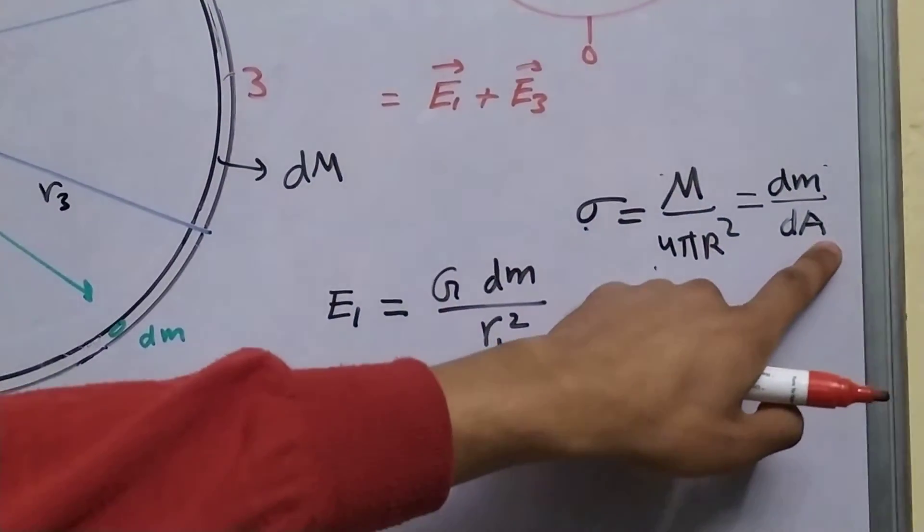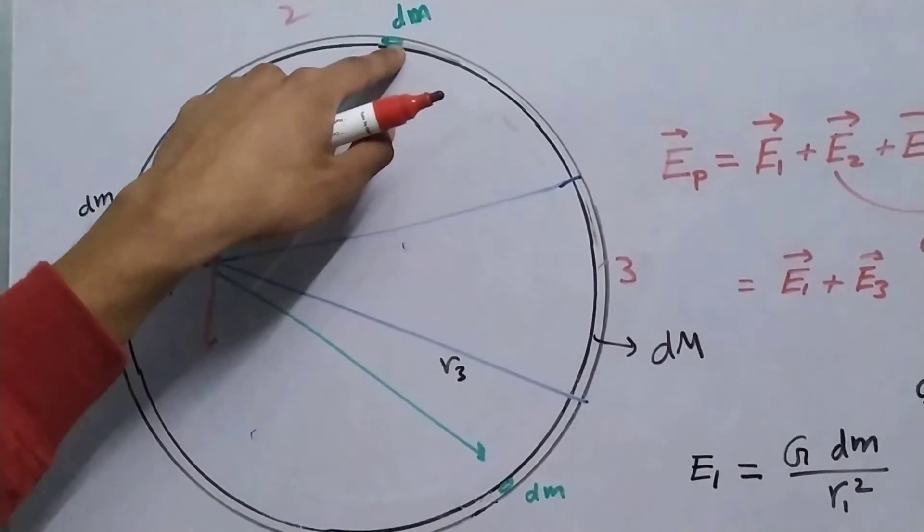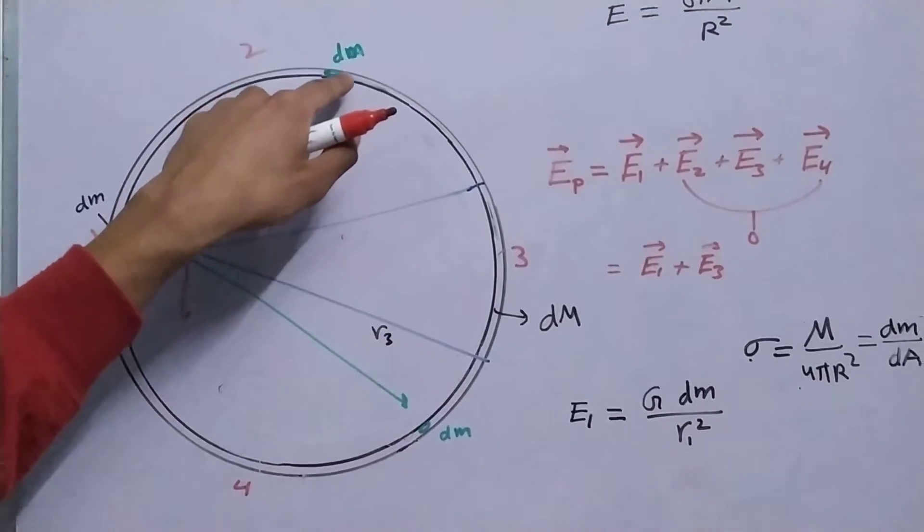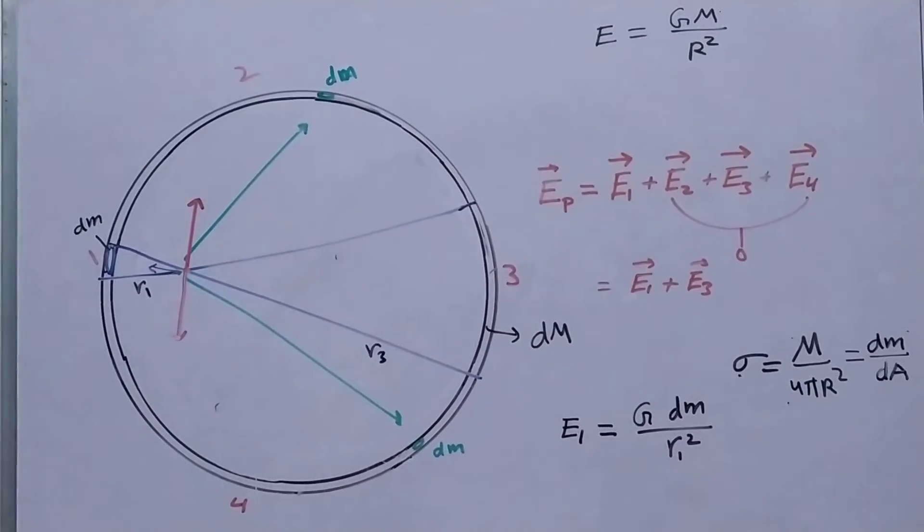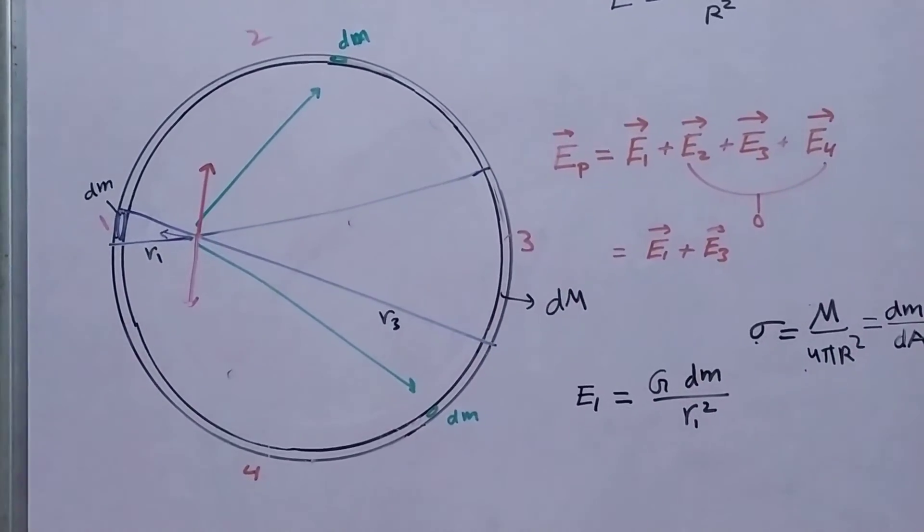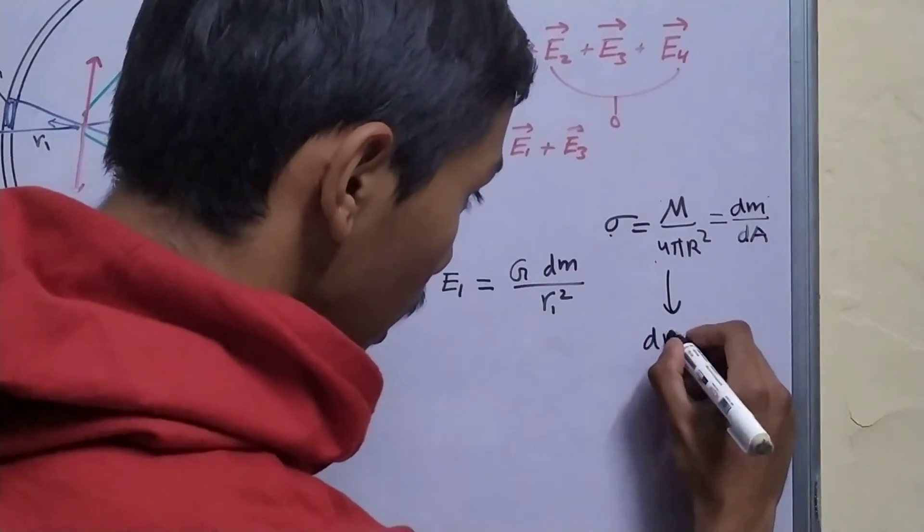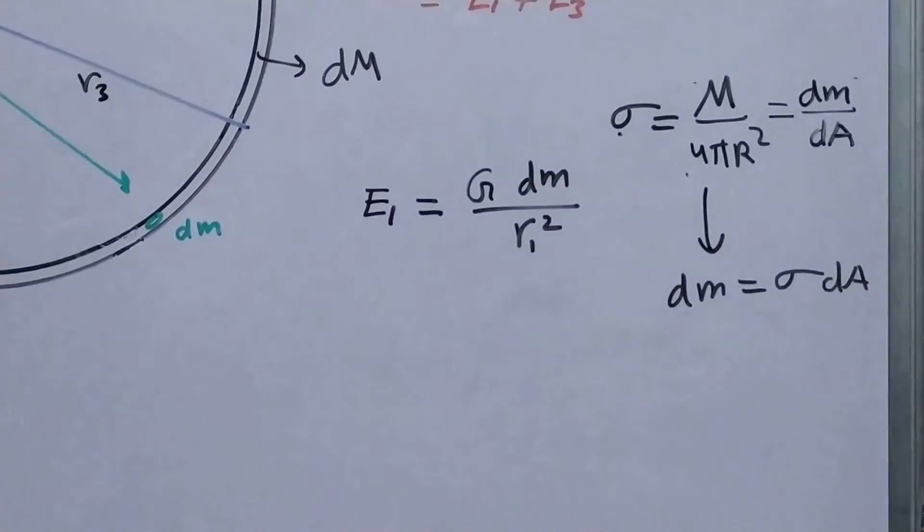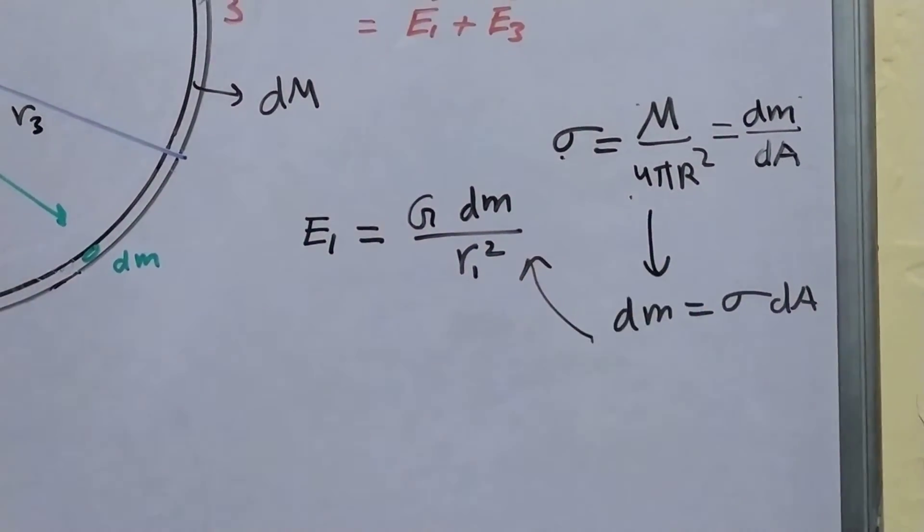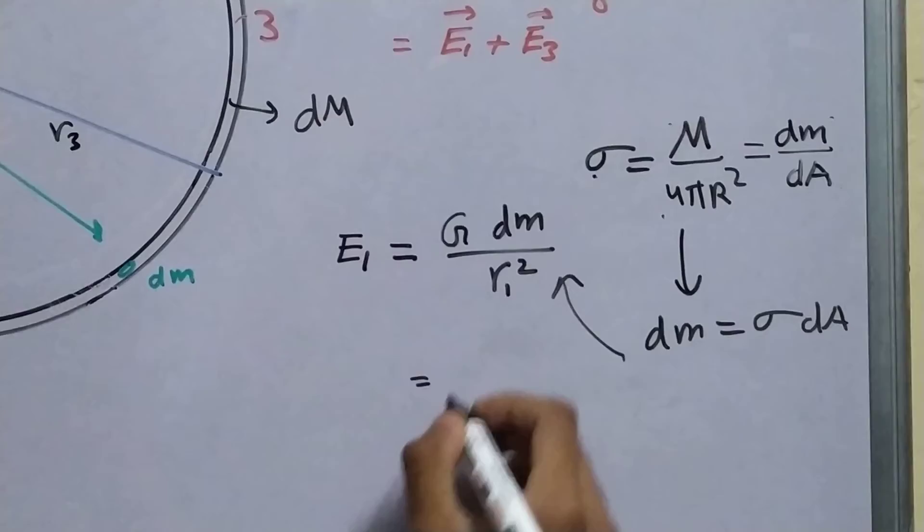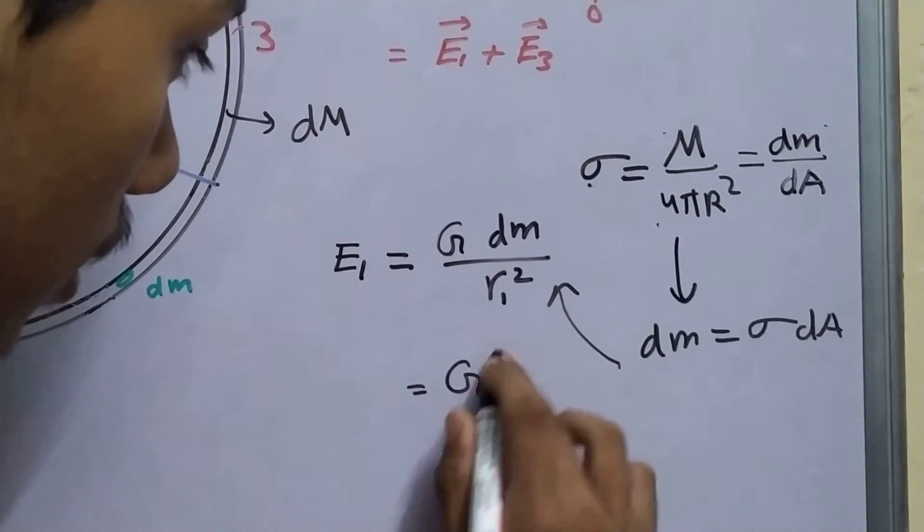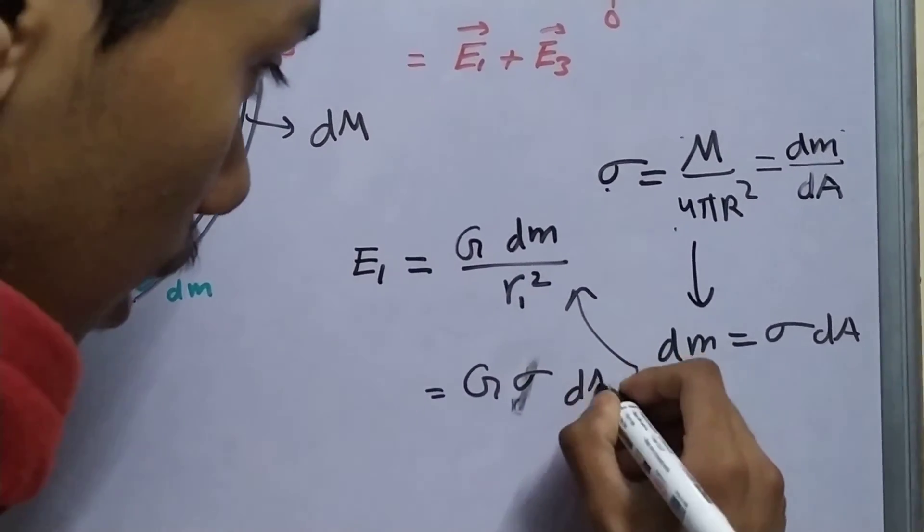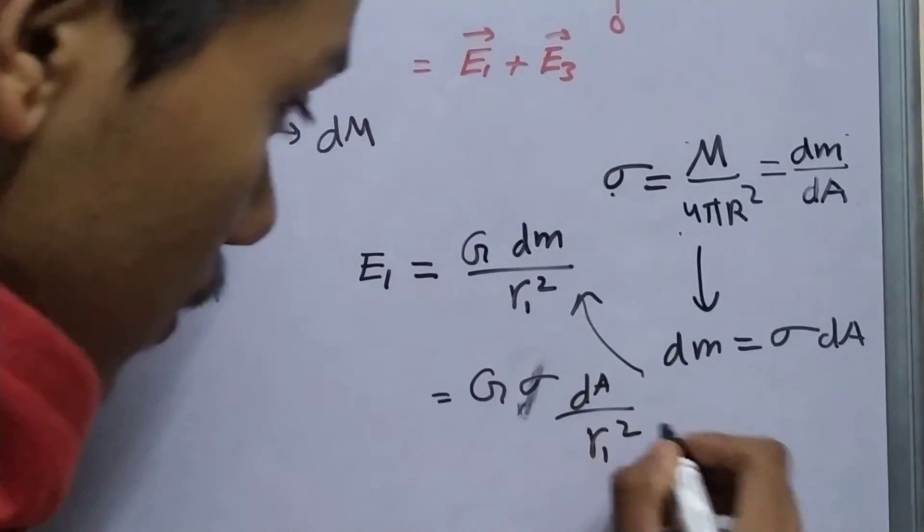Where this dA is the small area made by this mass element. So, from this you can say that dm is sigma times dA, just place it down right there, we get sigma dA upon r1 square.